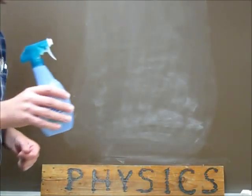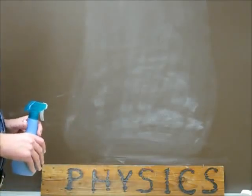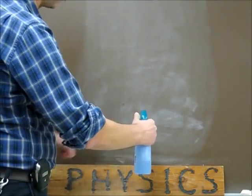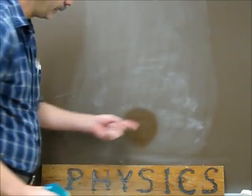So I have this prop, a little spray bottle of water, and a slightly chalky chalkboard. I'll go some distance out from the chalkboard and give a shot of my water. It makes a spot.